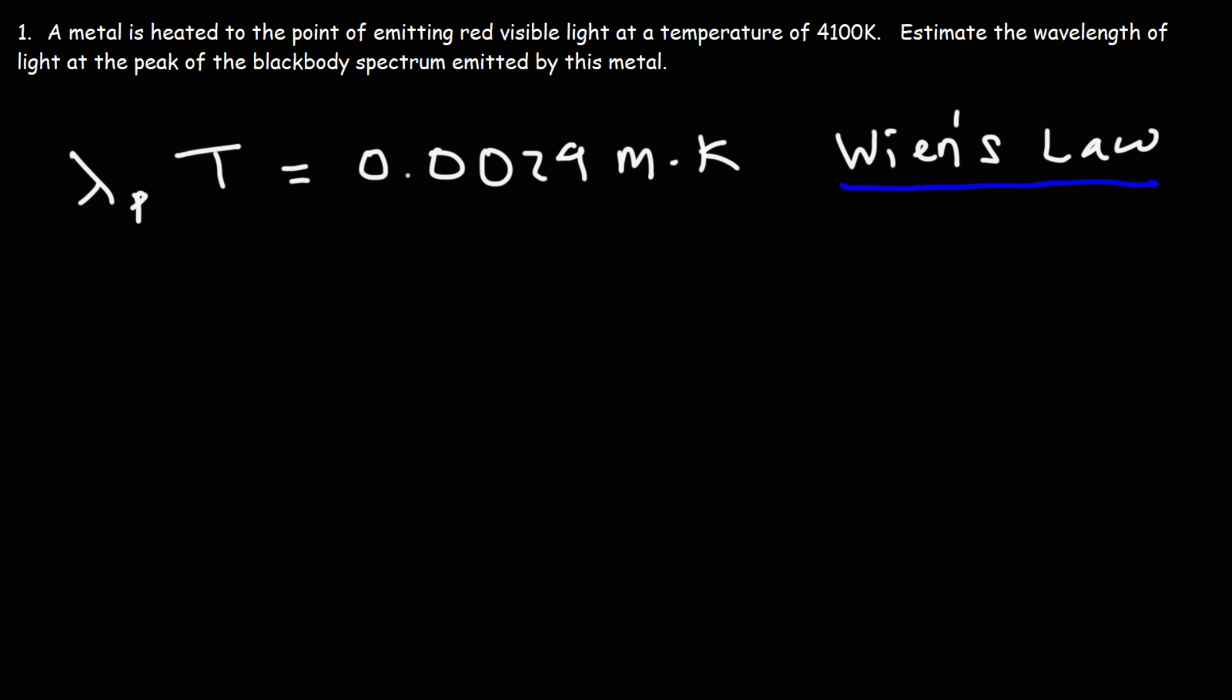In this particular problem, we have a metal that is heated to the point of emitting red visible light at a temperature of 4100 Kelvin. Our goal is to estimate the wavelength of light at the peak of the blackbody spectrum emitted by this metal.